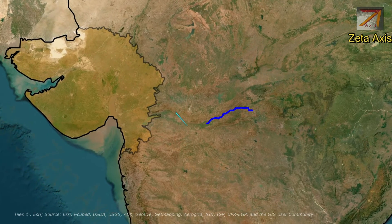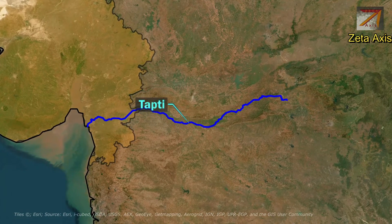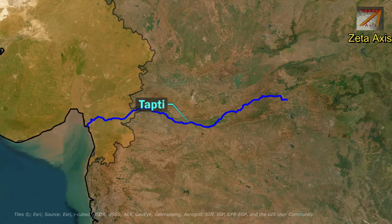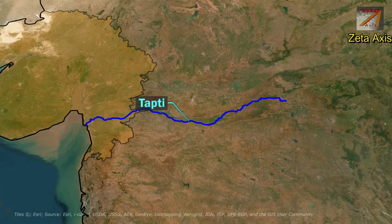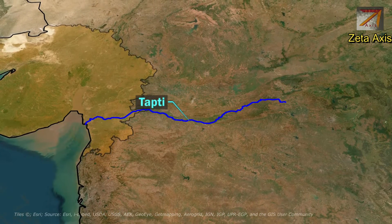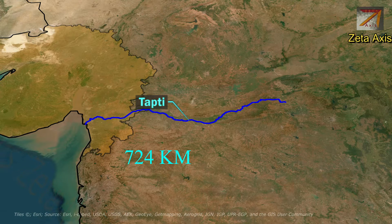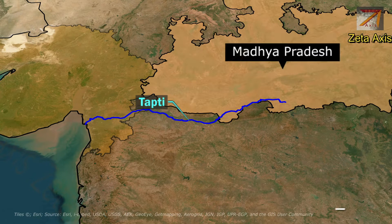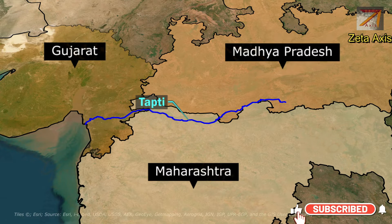The first river is Taapti River. Taapti River is the second longest west-flowing river in peninsular India after Narmada. Just like Narmada, Taapti River flows in a rift valley. The Taapti River flows for a total length of 724 km, flowing through Madhya Pradesh, Maharashtra, and Gujarat.